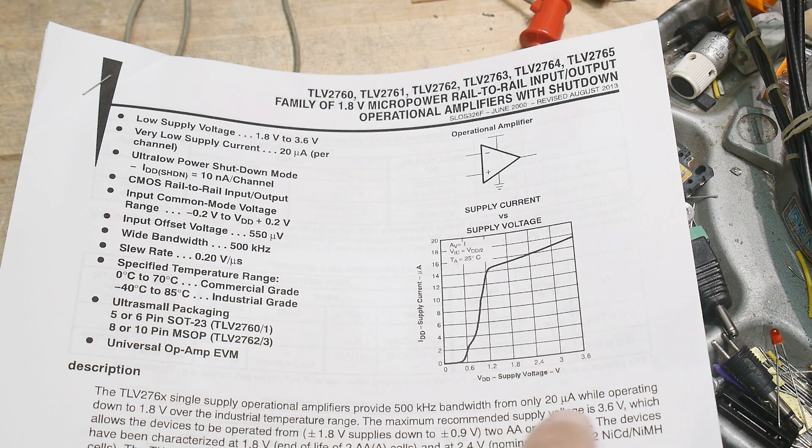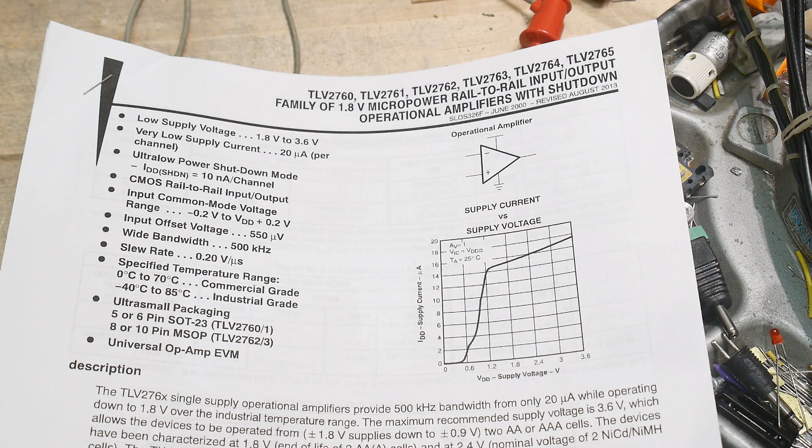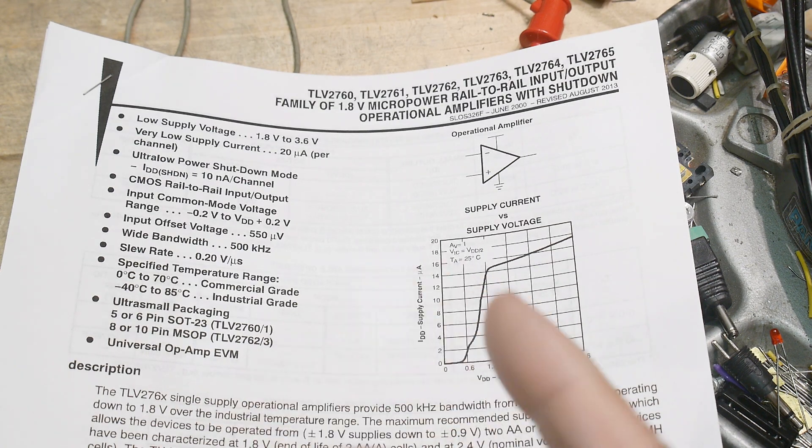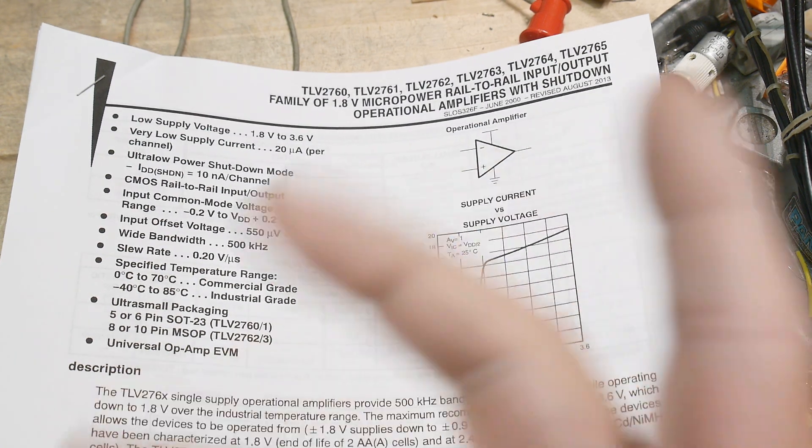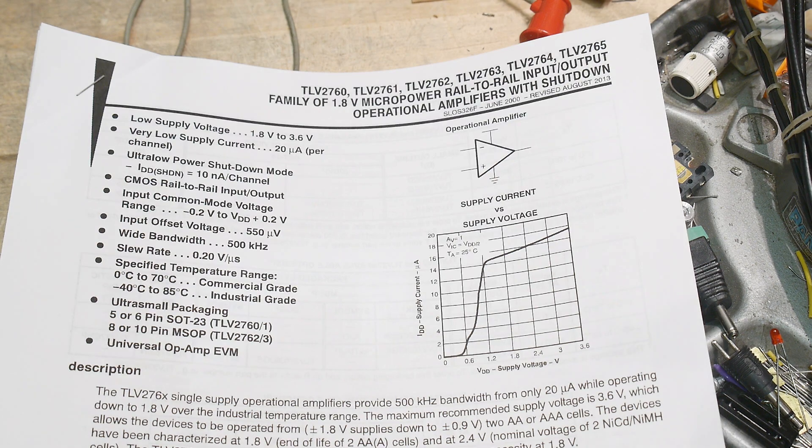But it says here the highest you can go is 3.6 volts, so you can have two AA batteries, and then when they finally go to end of life, you'll be down to about 1.8 volts. So it allows you to use your battery down to the very last little nubbin.